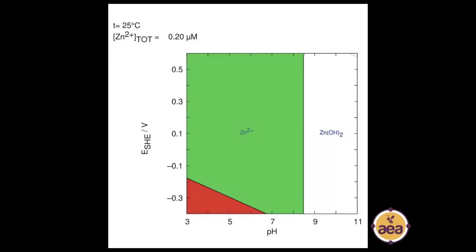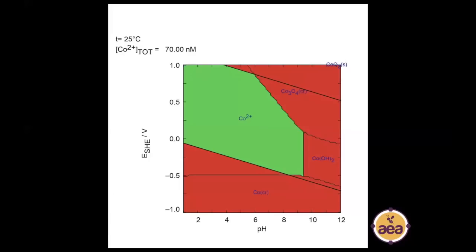Zinc is interesting. The Zn²⁺ form that plants absorb also has a very broad swath of availability. I find it really interesting that zinc is the most widely used trace mineral in mainstream agriculture. I believe the reason is that it is easy to apply and get a crop response. With other trace minerals like manganese and iron, they have a much smaller zone, and in excessively oxidized soil environments, we can apply those nutrients and not get a crop response — which is likely why zinc became so popular.